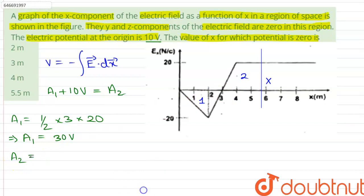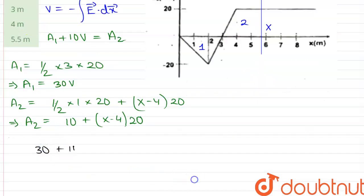And for A2, we can write that A2 is equals to 10 plus x minus 4 into 10 plus x minus 4 into 20. Therefore we can write that 30 plus 10 is equals to 10 plus x minus 4 multiplied by 20.